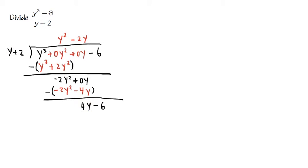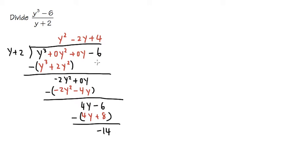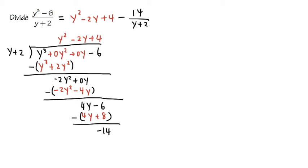I put down positive 4. Positive 4 times y gives us exactly positive 4y, and 4 times 2 is plus 8. We subtract with parentheses: 4y minus 4y is 0. Then negative 6 minus positive 8 — that's negative 6 minus 8, which equals negative 14. We are done with the long division process. The answer is the quotient: y squared minus 2y plus 4, and since we have a remainder, we add minus 14 over the original denominator, y plus 2.